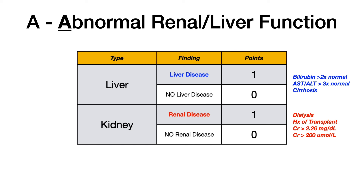The presence of renal disease also scores one point; if they don't have renal disease, that category is zero points. Renal disease is defined as the patient being on hemodialysis, having a history of renal transplant, or having a creatinine greater than 2.26 milligrams per deciliter or greater than 200 micromoles per liter. If a patient has both liver and kidney disease, they score two points in A for abnormal.